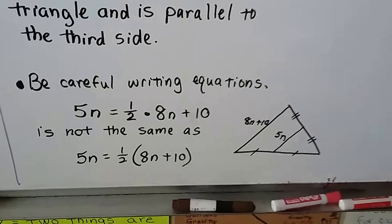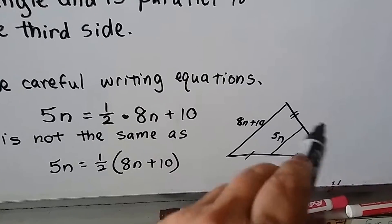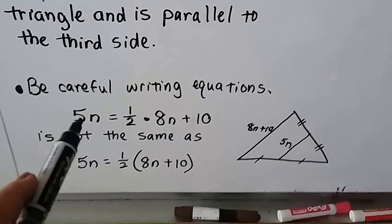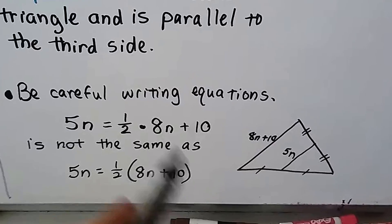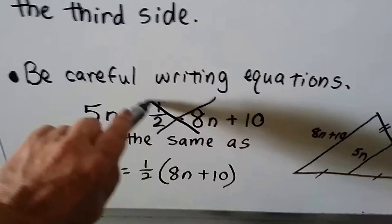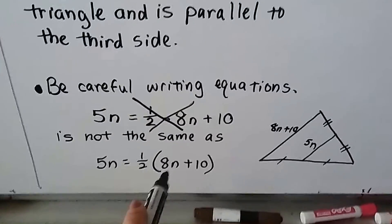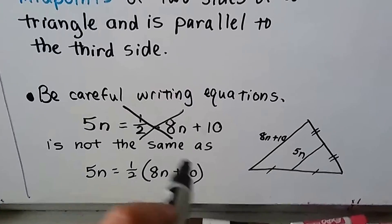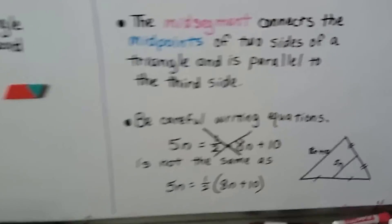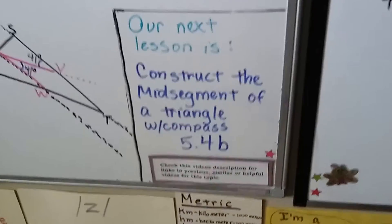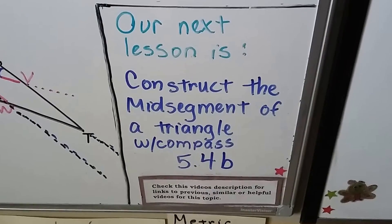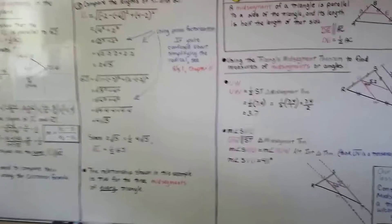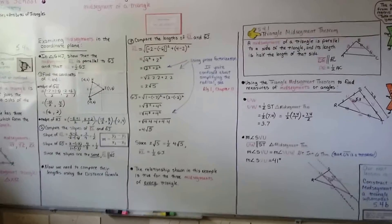Be careful: when you see something like 5n as the mid-segment, you know it's half of the other side. When writing the equation, do not write 5n equals one-half times 8n plus 10 — that's wrong. The correct way is 5n equals one-half times (8n plus 10), and you distribute the one-half to both 8n and 10. Our next video, 5.4b, will be a quick one constructing the mid-segment of a triangle with a compass. Remember your transversals, distance formula, and midpoint formula, and you'll be okay.